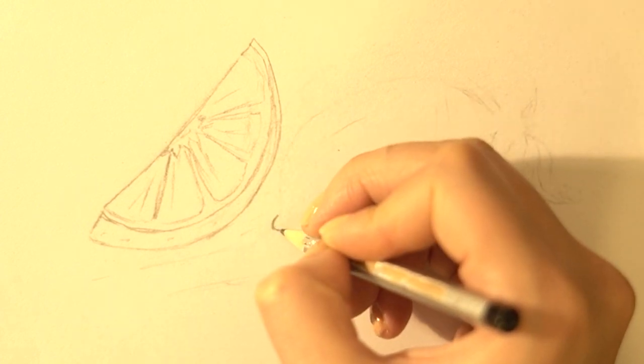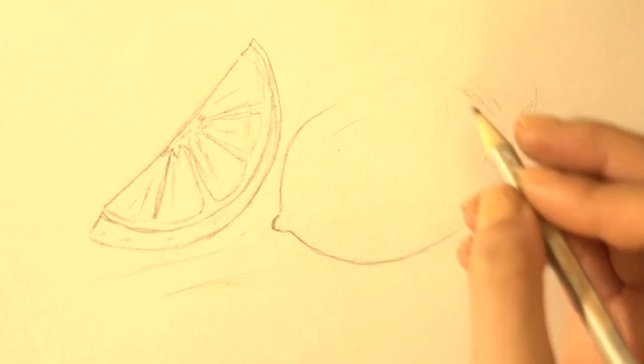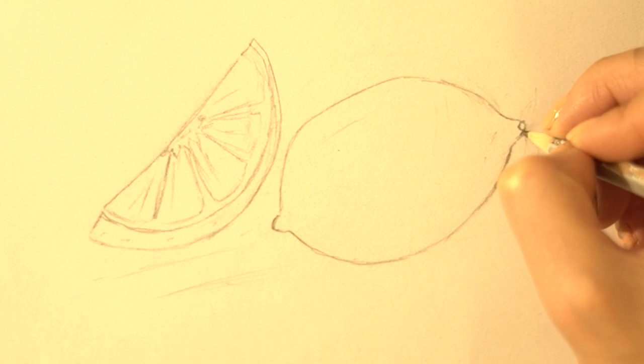The lemon shape is quite straightforward, but make sure you taper it at the ends. Our lemon also has a little stock with two little leaves at the end.